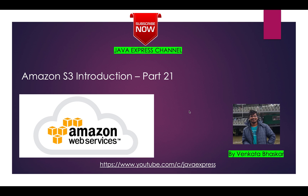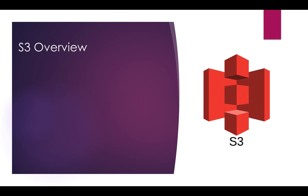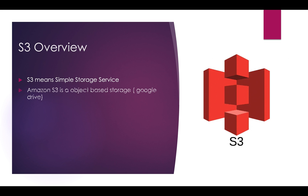Hi friends, welcome to Java Express channel. In the previous section I explained elastic load balancer and auto scaling group. Today we cover one of the important services Amazon provides — S3. This is one of the oldest services available. S3 stands for Simple Storage Service — it's like Google Drive. If you have a Gmail account you can store files and directories; in the same way you can store data in Amazon S3. S3 is object-based storage, and an object is nothing but a file — a video, a movie, a PDF, a text file — everything is called an object.